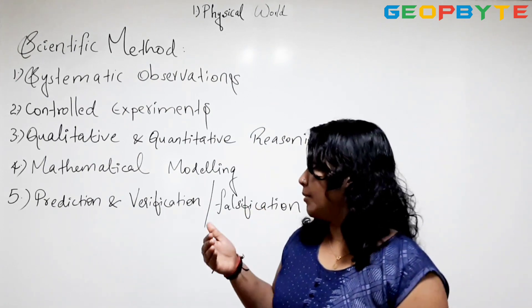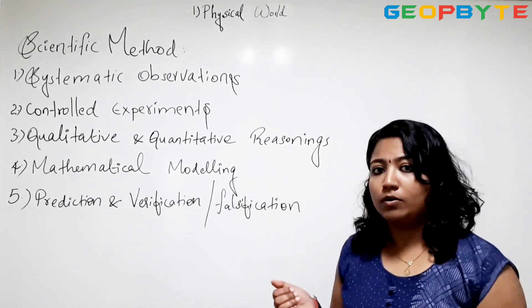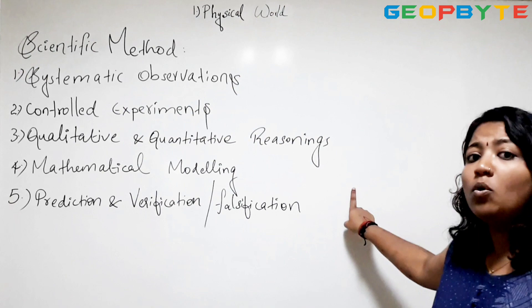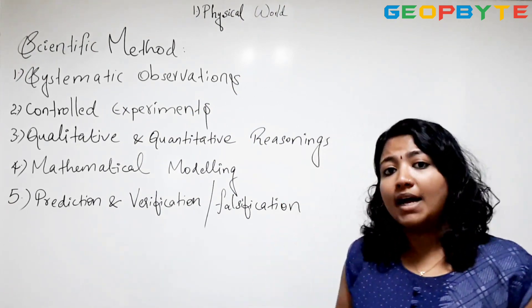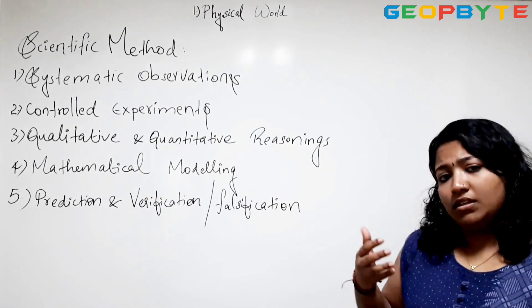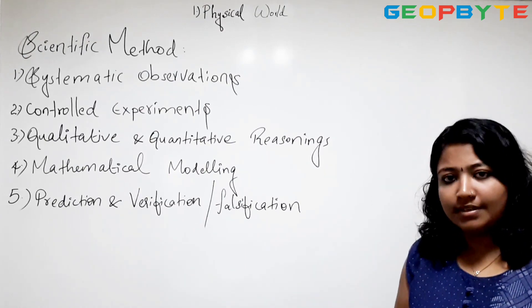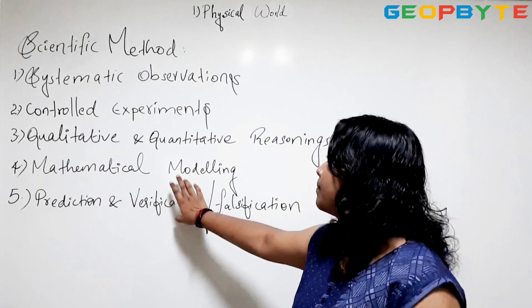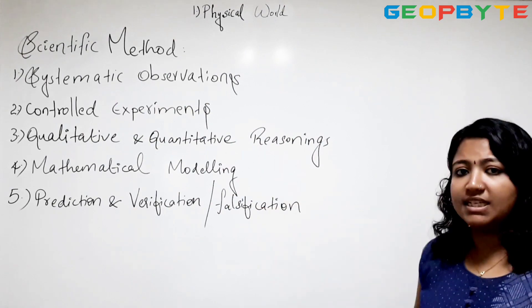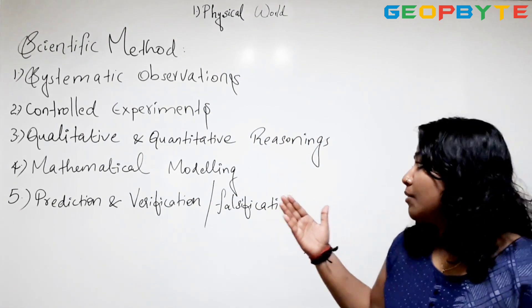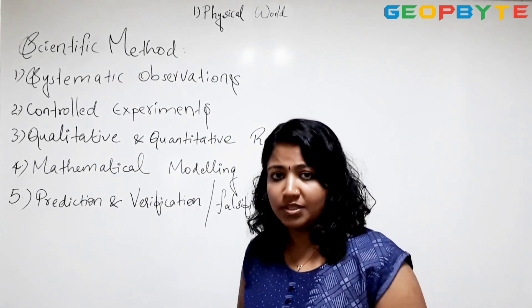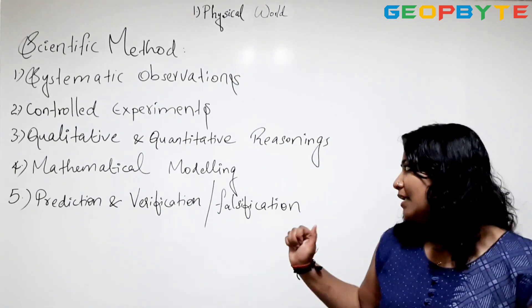Qualitative and quantitative reasoning allows one to test the hypothesis by systematically collecting data, analyzing it, and also by exploring new ideas and experiences in depth. The fourth step is mathematical modeling — a system can be defined using mathematical equations. Then comes prediction and verification or falsification: whether a certain thing is universally accepted or not comes under this step.